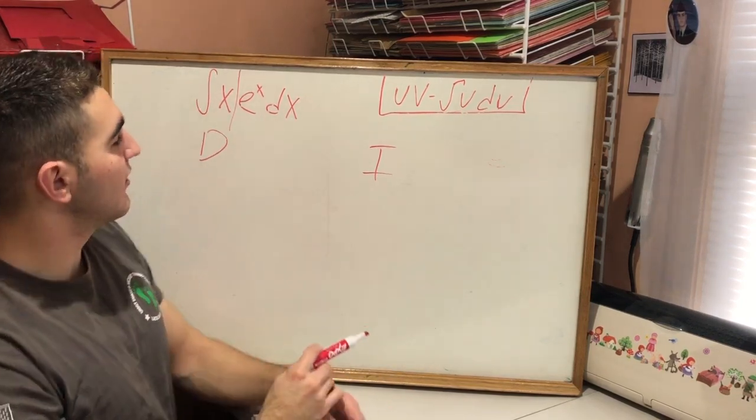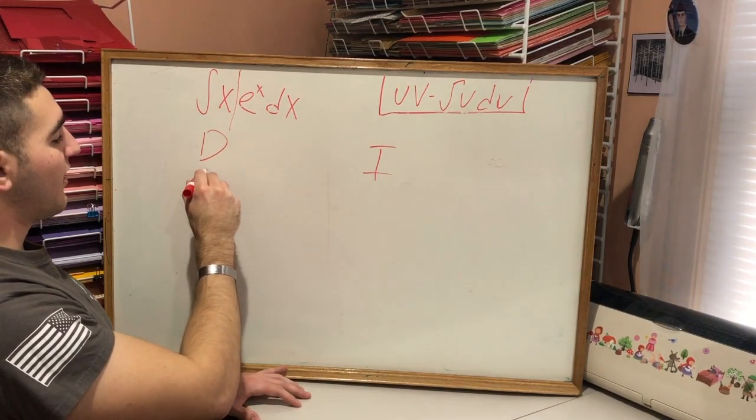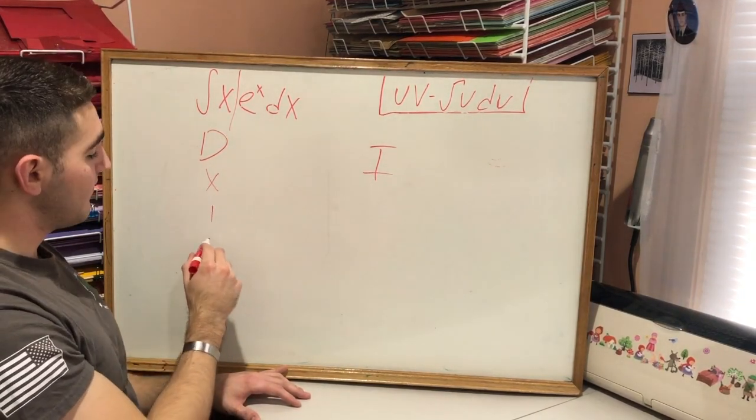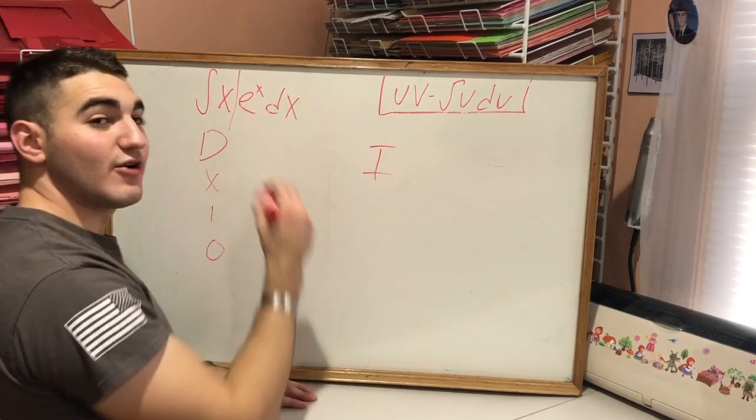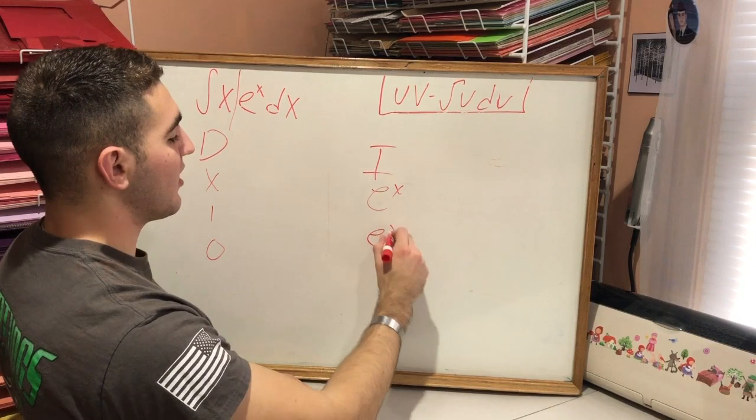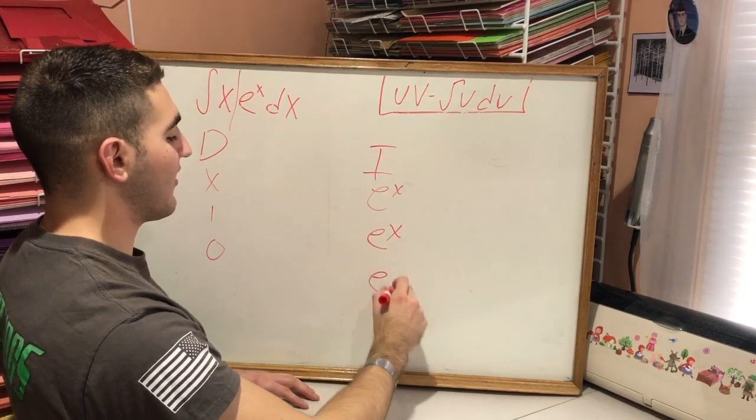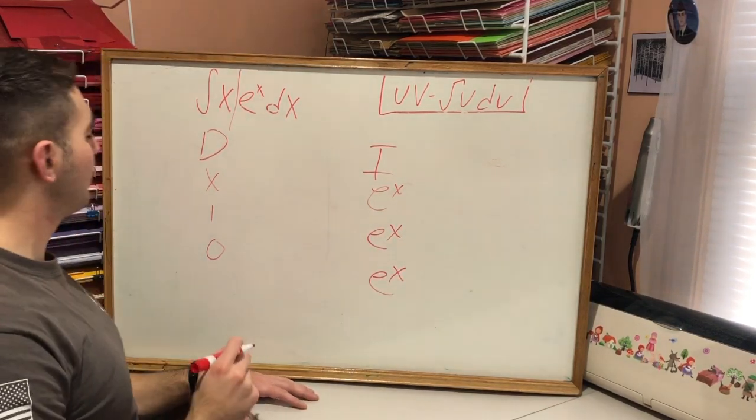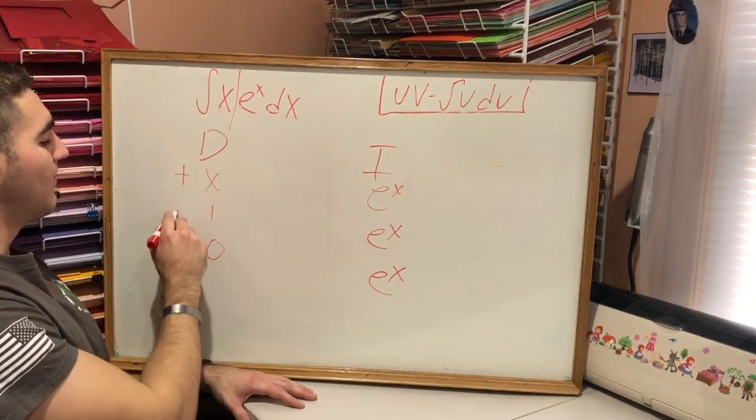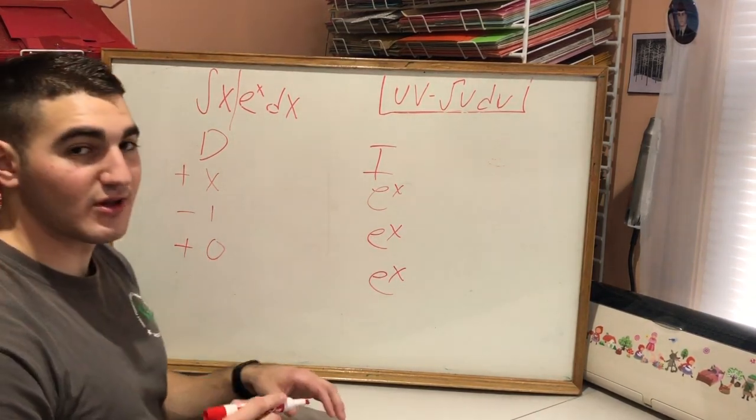So in this situation we're actually gonna pick the term that goes to zero because derivative and integral of e to the x is e to the x. So let's get started, we're gonna write it like this. Derivative of x is 1, derivative of 1 is 0. Now we're gonna integrate e to the x. The integral of e to the x is e to the x, and integral of e to the x again is e to the x.